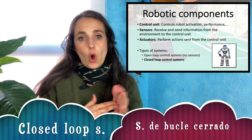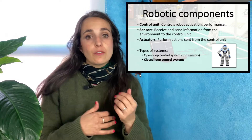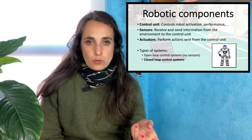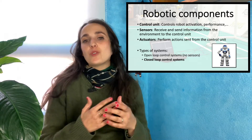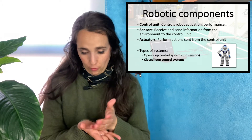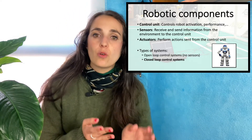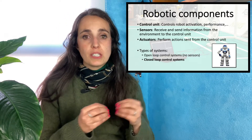We have two main control systems: open loop and closed loop. The main difference is that open loops don't have sensors — they just have the motherboard and actuators. In closed loops, which are the vast majority of robots, they have the control unit, sensors, and actuators. Today we are going to focus on these closed loop systems.